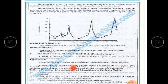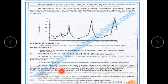Periodic function means the ninth element is similar to the first. He described 12 horizontal rows called periods and 8 vertical columns called groups. The 8 groups are further divided into subgroups. Now we read the salient features — advantages of Mendeleev's periodic table.